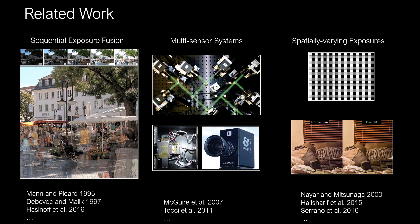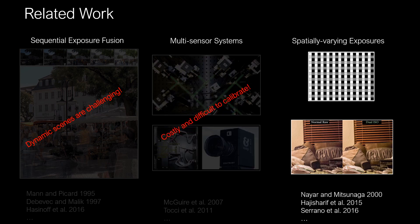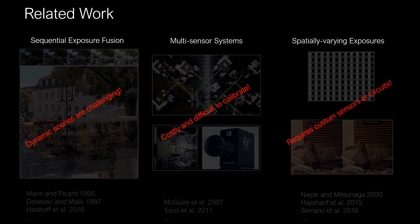Several popular high-dynamic range imaging techniques exist. For example, one can capture several photographs with different exposure settings, use camera systems with multiple sensors, or use an array of neutral density filters or custom sensor circuits to create spatially varying pixel exposures. However, sequentially captured images can create ghosting artifacts, multi-sensor systems are costly and difficult to calibrate, and spatially varying pixel exposures require custom sensors or sensor circuits.